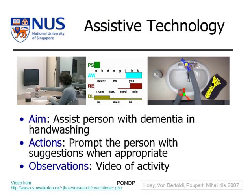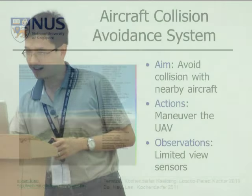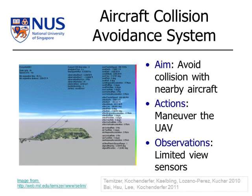Assistive technology is another example — a system trialed in Canada for assisting elderly people with dementia, to remind and prompt them when they wash their hands. The aim is to assist people with dementia during hand-washing, and the actions are to prompt the person if they keep washing without stopping. The observations would be the video of the activity.